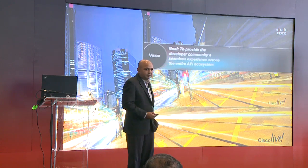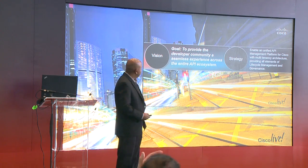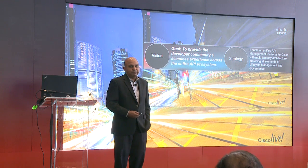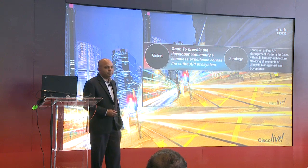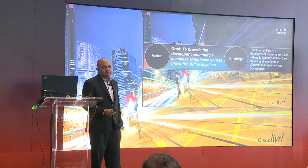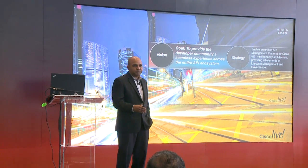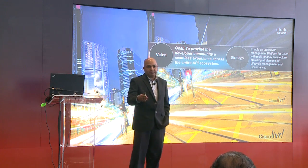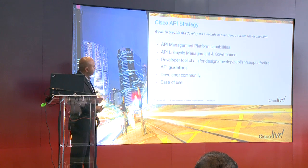Let's begin with our vision strategy. It comes down to how we create and consume APIs. The goal is to provide a seamless experience for our developer community across the entire ecosystem — whether you're an API developer or all the way to an app consumer. We view the whole thing as an ecosystem enabled by a platform that addresses all components of the lifecycle. It's a multi-tenancy architecture that plays in all elements of the lifecycle, from APIs all the way to an app. APIs are a means to an end.